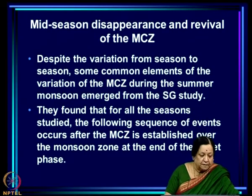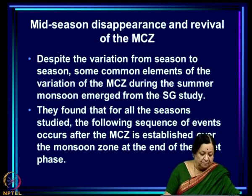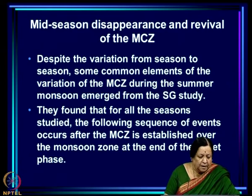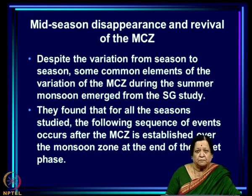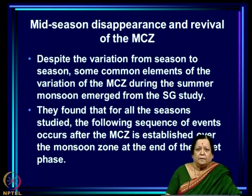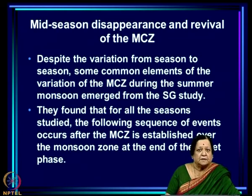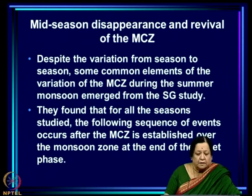There is a very special sequence of events seen year after year in the evolution of this season: the mid-season disappearance and revival of the maximum cloud zone or MCZ. Sikha and Ghatgir noted that despite variation from season to season, common elements emerge. For all seasons studied, after the MCZ is established over the monsoon zone at the end of the onset phase, the following sequence of events occurs.